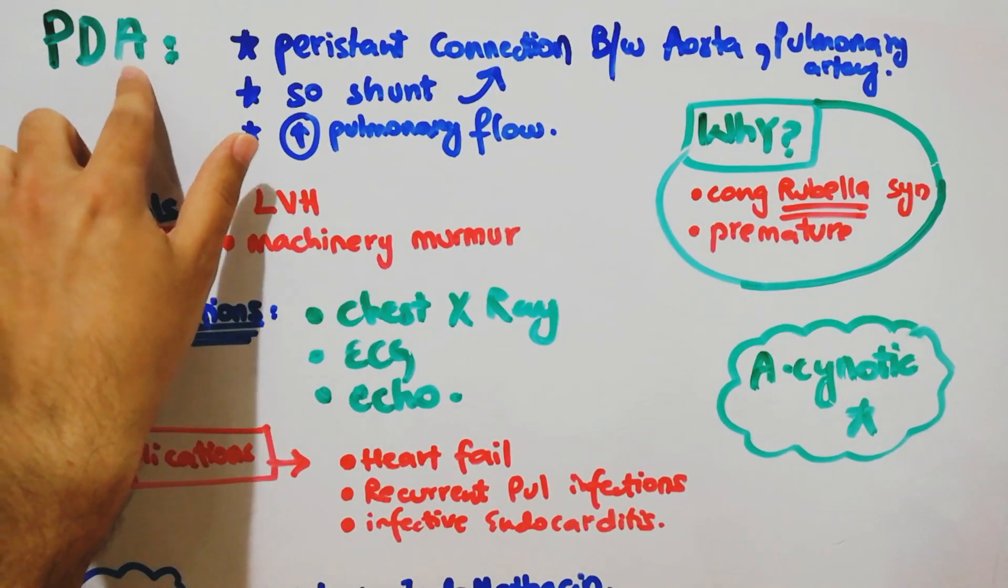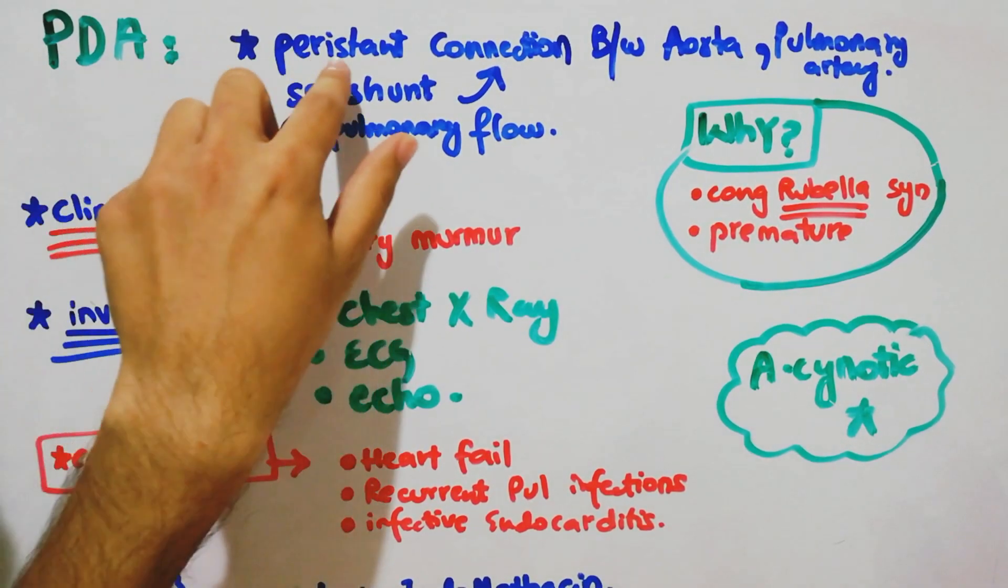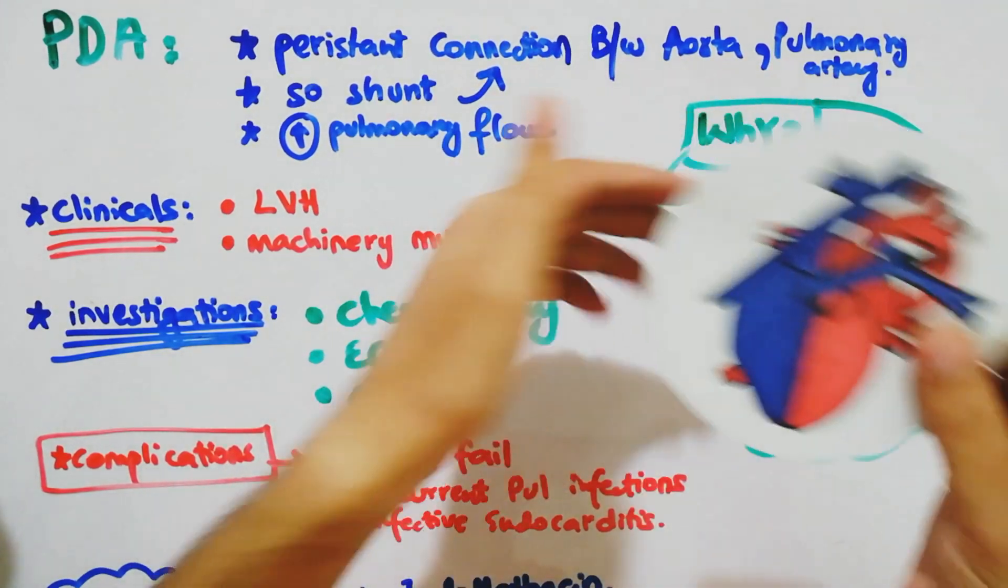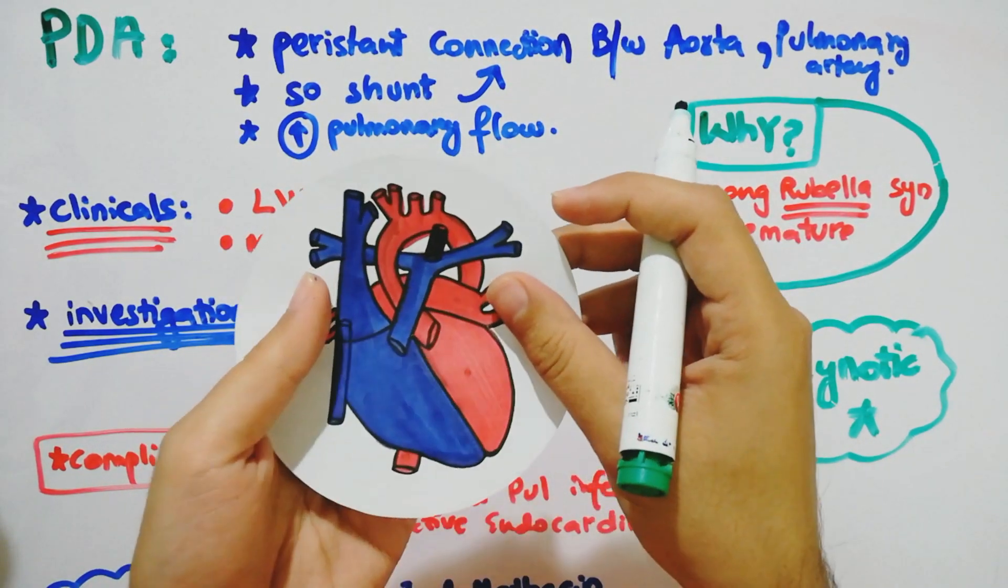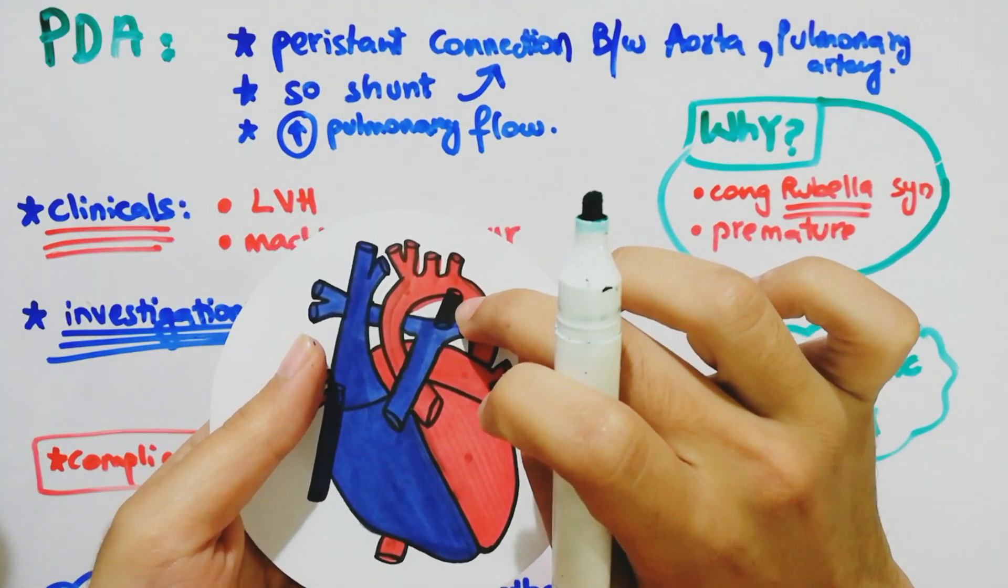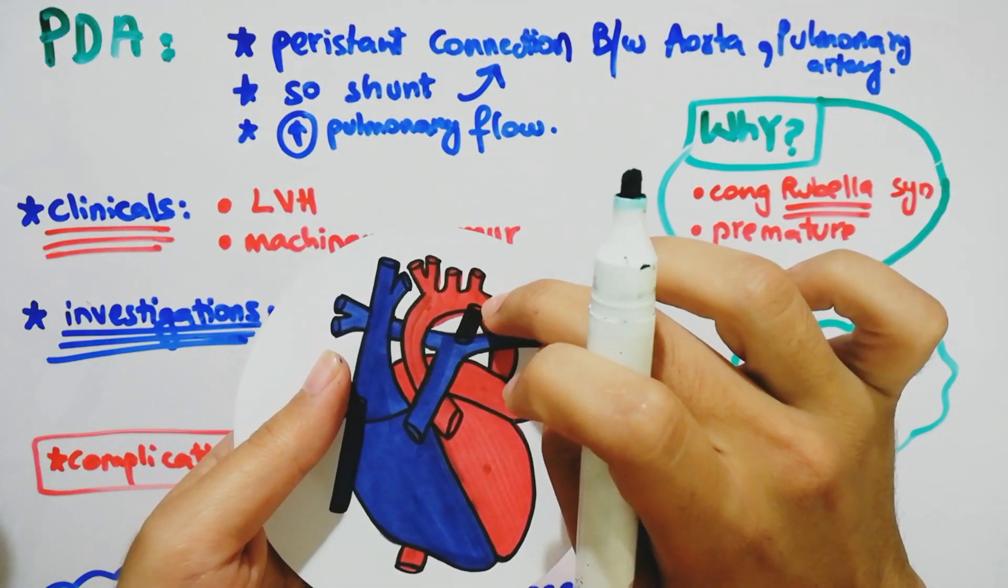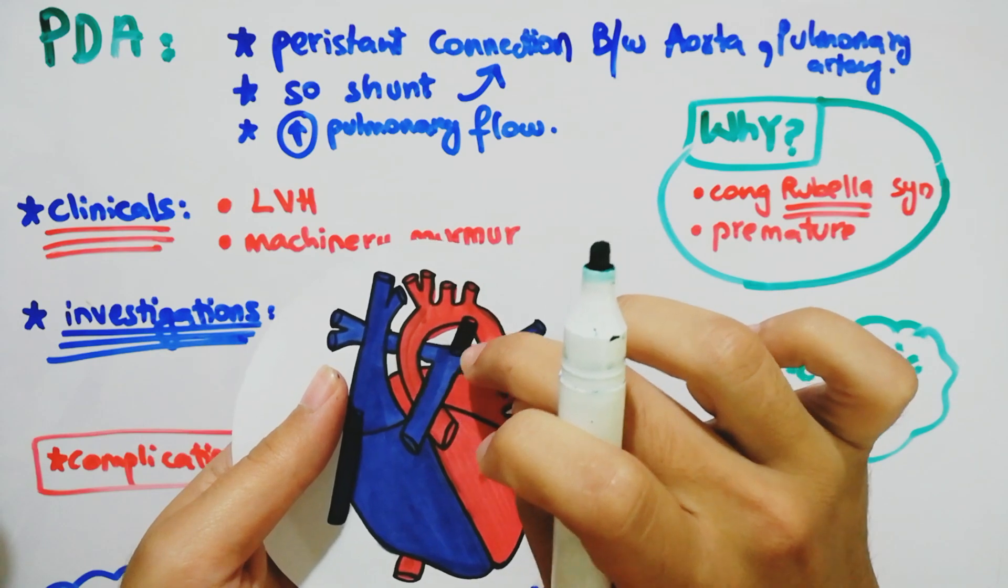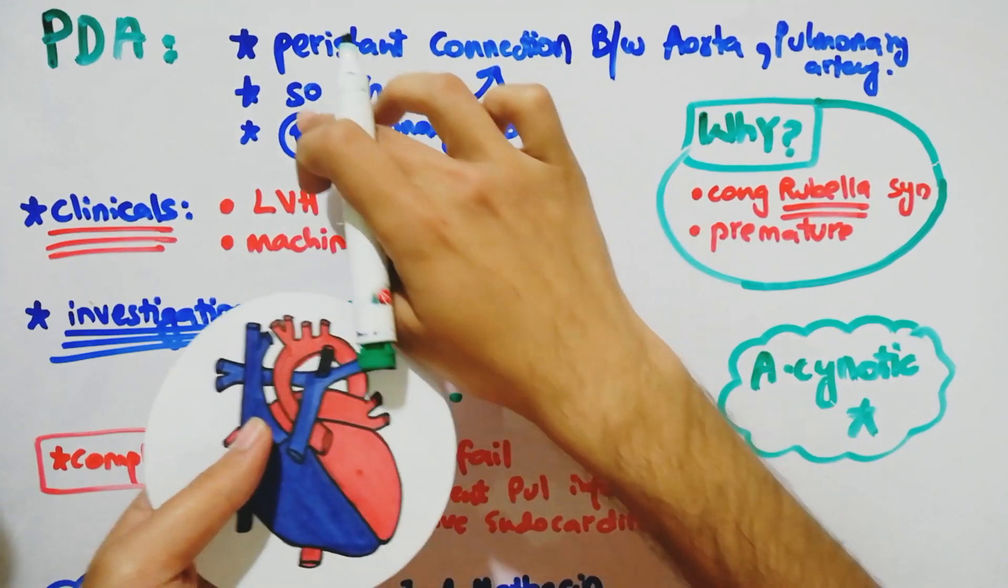Let's discuss patent ductus arteriosus, PDA. This is the persistent connection between the aorta and the pulmonary circulation. The pulmonary artery and the aorta - this is the persistent connection between the aorta and the pulmonary artery.